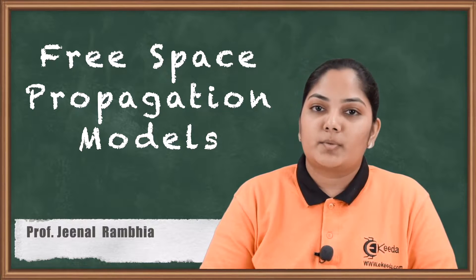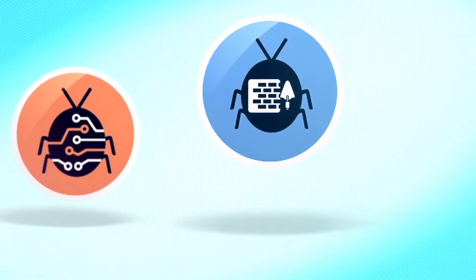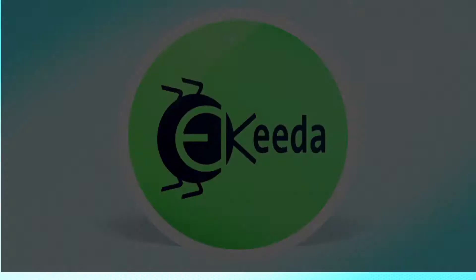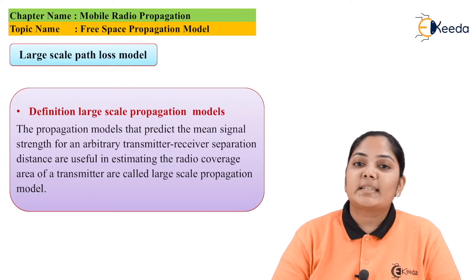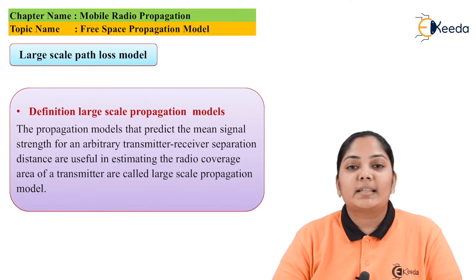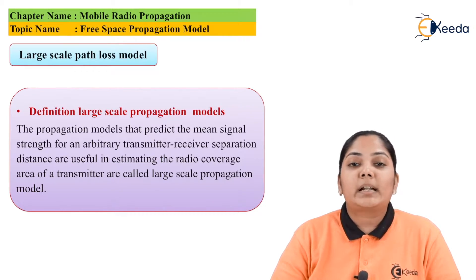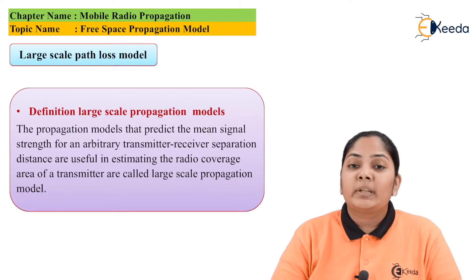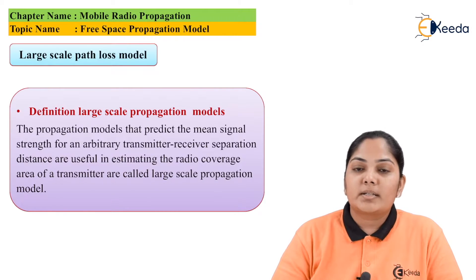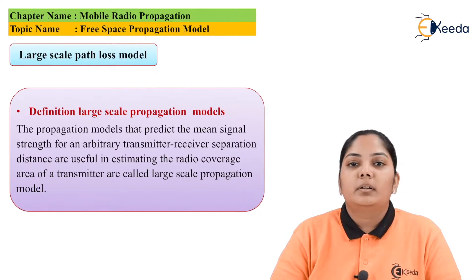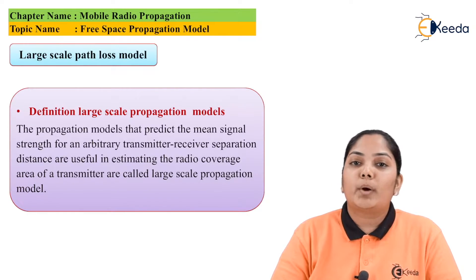The first one is called the large scale path loss model. The propagation model that estimates the mean signal strength of the transmitted signal in order to identify the coverage area, when the transmitter-receiver distance is very large, is called the large scale path loss model. Here we are trying to understand how much loss has occurred over this larger transmitter-receiver distance.